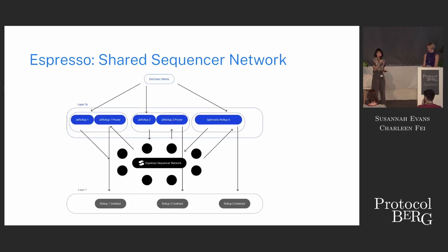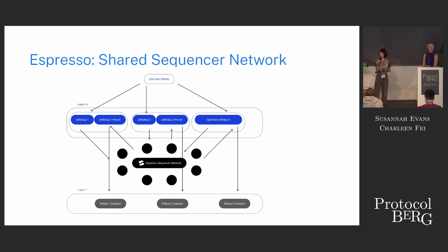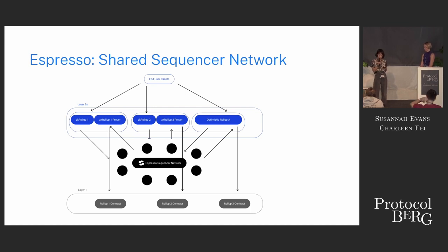Another interoperability solution, a bit more specialized and complicated, is a shared sequencer network called Espresso. Espresso has excellent documentation if you want to read more. Basically, users create and submit transactions to the rollup; these transactions are then gossiped through the Espresso sequencer network. They remain in mempools until HotShot consensus — their consensus protocol — determines a leader from all these nodes. This leader proposes the block and propagates it back through the rollups, executors, and provers, passing through an Espresso DA layer before being finalized in the contract on layer one.